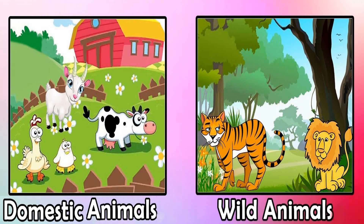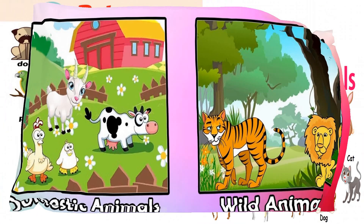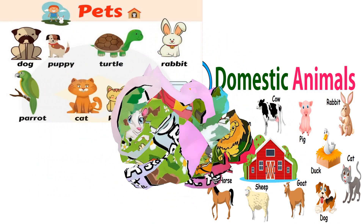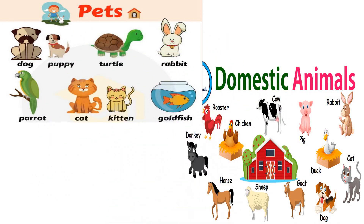Children, we have learned about land animals in the previous video. Those are called domestic animals. Do you know, pet and farm animals are also called domestic animals.